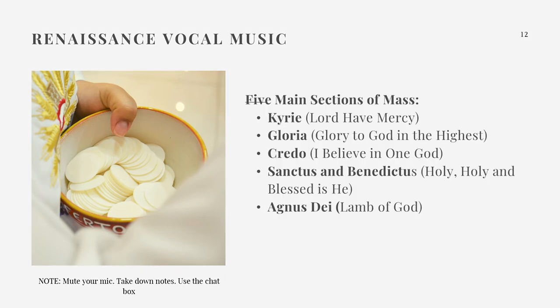The five main sections of a mass are: the Kyrie, also known as 'Lord have mercy'; Gloria, or 'Glory to God in the Highest'; Credo, or 'I believe in one God'; Sanctus and Benedictus, or 'Holy, Holy and Blessed is He'; and Agnus Dei, or 'Lamb of God.' Now let's listen to an example of a mass.